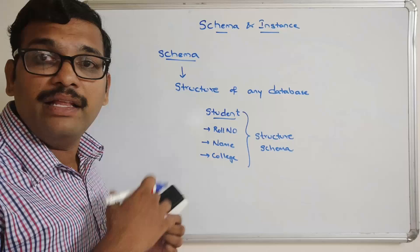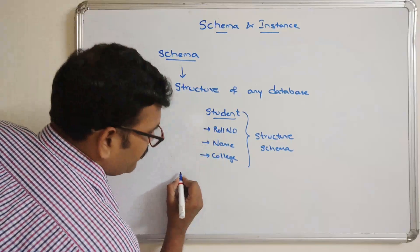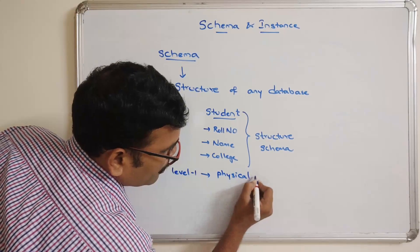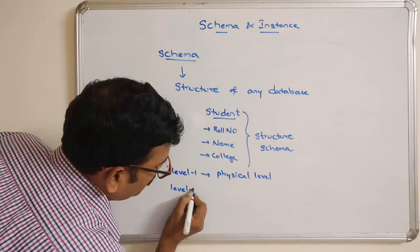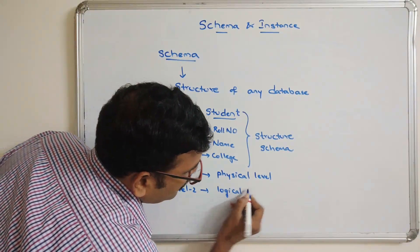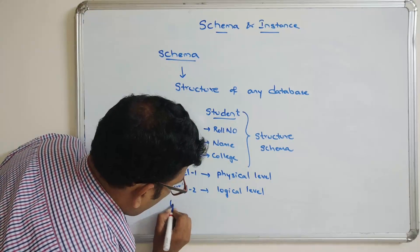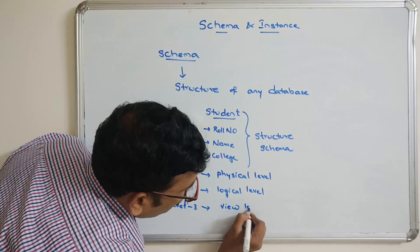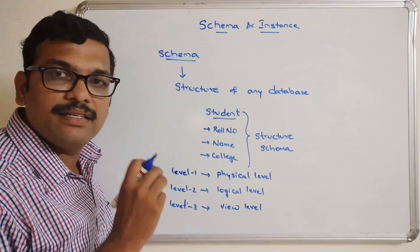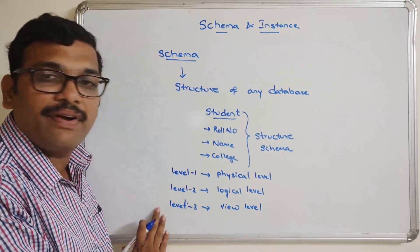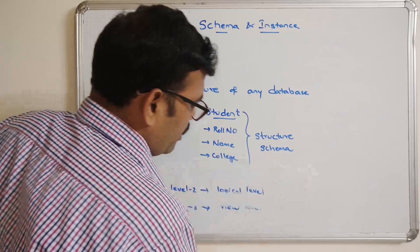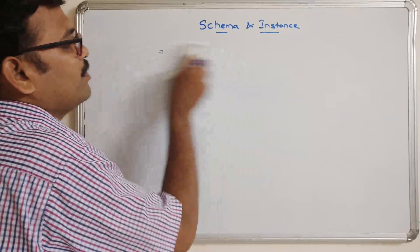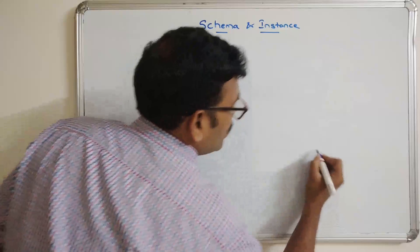Schema is divided into three categories, and database design is done at three levels: the first level is the physical level, the second is the logical level, and the third is the view level. The design of a database can be done at these three different levels, and this process is called the three-schema architecture.